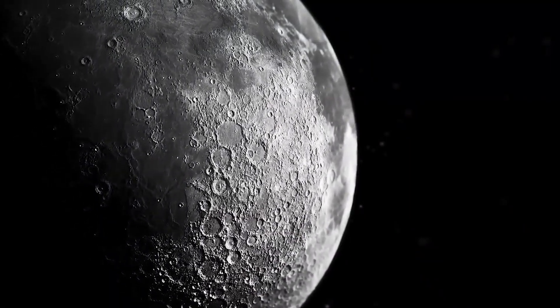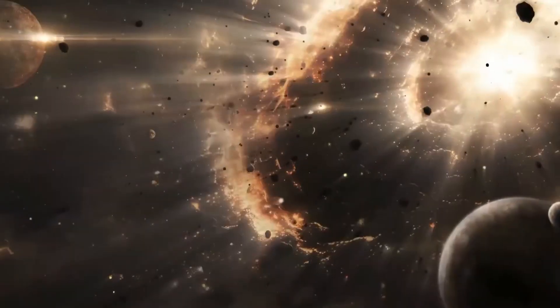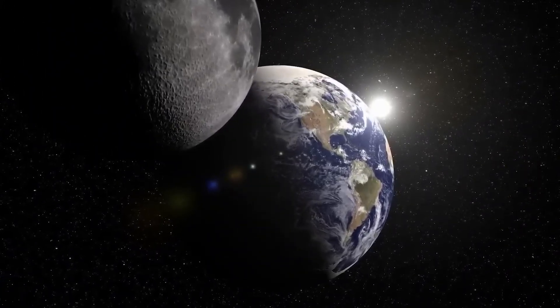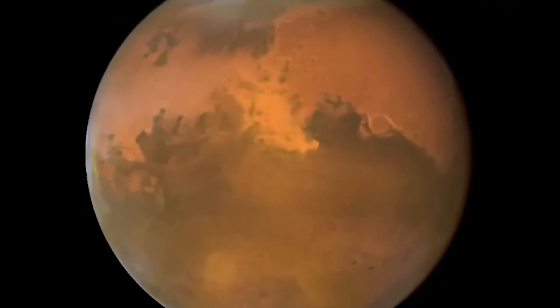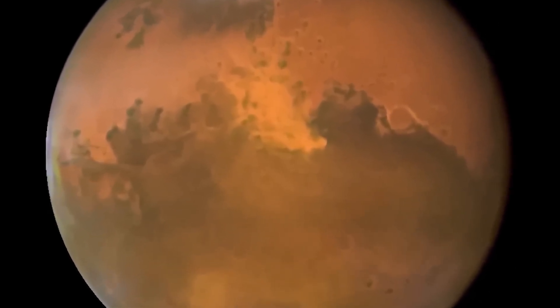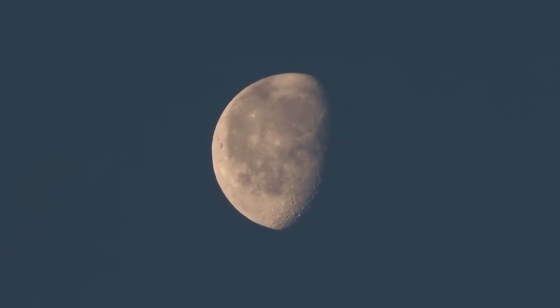Further, Hubble confirmed the presence of sodium chloride on Europa's surface, suggesting that the ocean below may be chemically similar to Earth's own seas, a detail with significant implications for habitability.